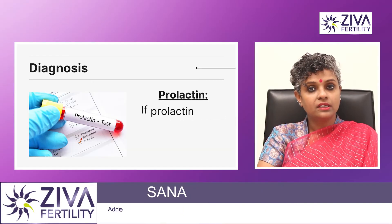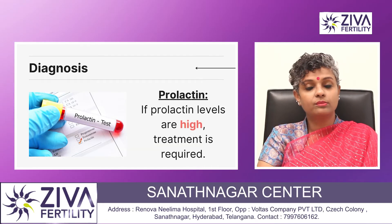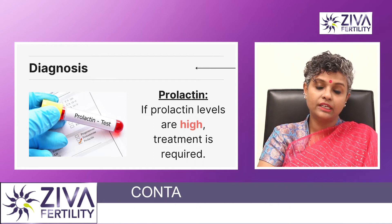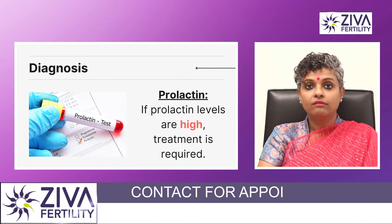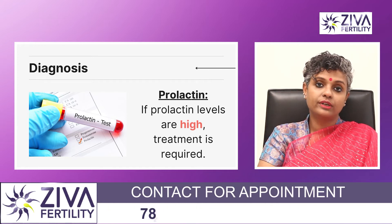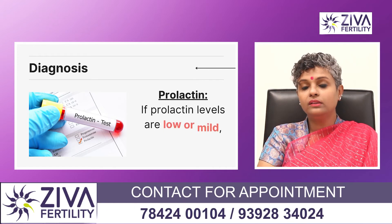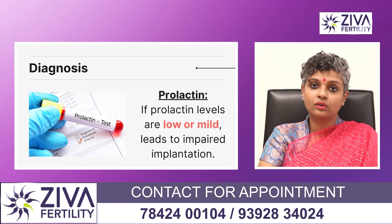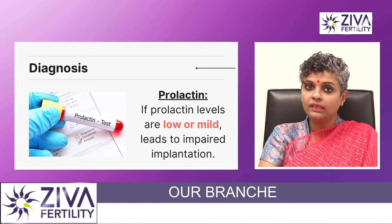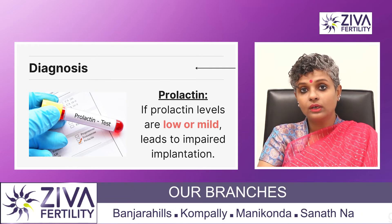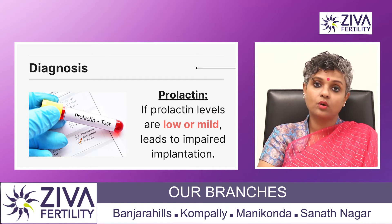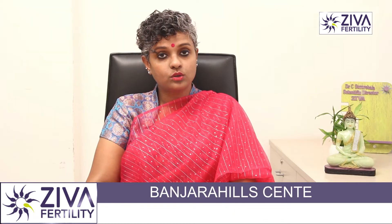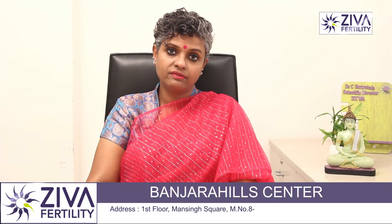Prolactin levels — when it is very high, treatment is given for it. There are medications and various modes of treatment. But when the prolactin is not very high or not at the normal level, progesterone levels are low and therefore it can cause impaired implantation. That also causes pregnancy failures.